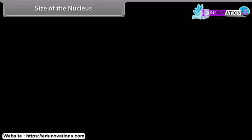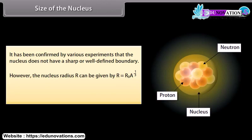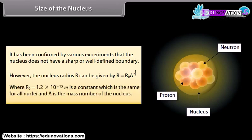Size of the nucleus: It has been confirmed by various experiments that the nucleus does not have a sharp or well-defined boundary. However, the nucleus radius R can be given by R = R₀ × A^(1/3), where R₀ = 1.2 × 10⁻¹⁵ m is a constant which is the same for all nuclei, and A is the mass number of the nucleus.